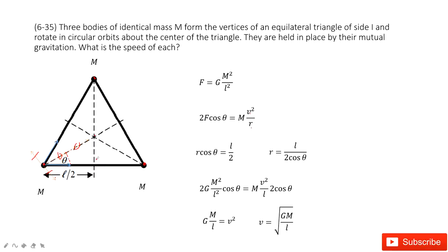Next, we need to find R, the radius for this circular motion. Because we know this angle theta and this side is L divided by 2, R times cosine theta equals this side. So R equals L divided by 2 cosine theta.